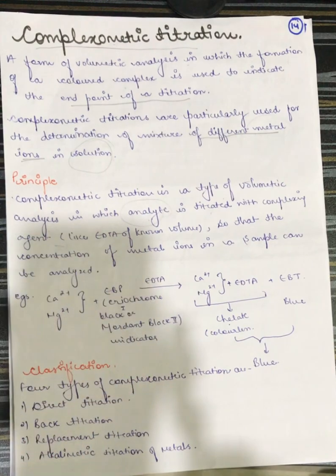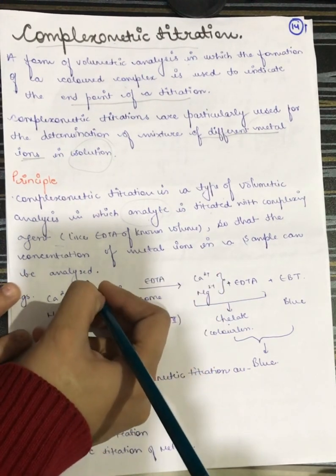For example, EDTA. Most commonly used, our solvent, which is the complexing agent, it is the EDTA. It is the ethylene diamine tetraacetic acid. So that the concentration of metal ion in a sample can be analyzed.